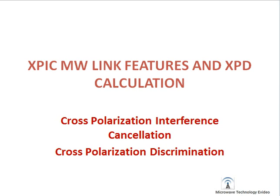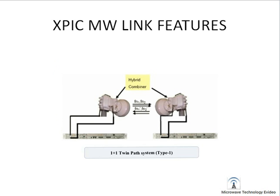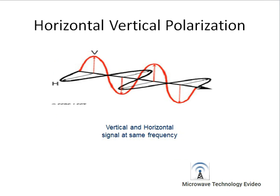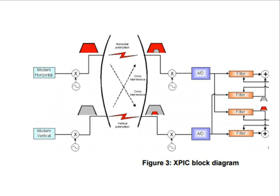Today we are discussing XPIC microwave link features and XPD calculation. XPIC means Cross Polarization Interference Cancellation. In microwave, we normally transmit one signal using horizontal or vertical polarization, but in an XPIC link we transmit two signals simultaneously using both horizontal and vertical polarization of the antenna. For this, we need a dual polarization antenna.